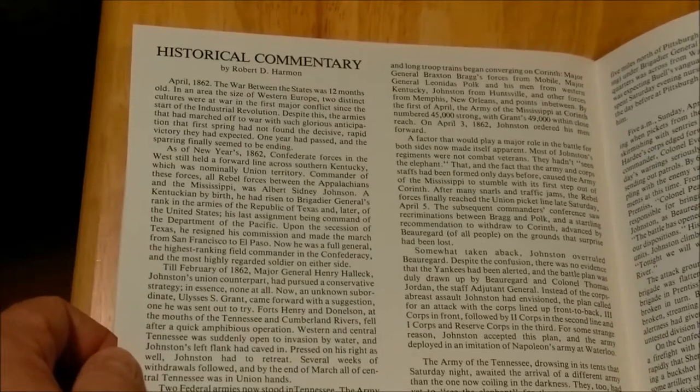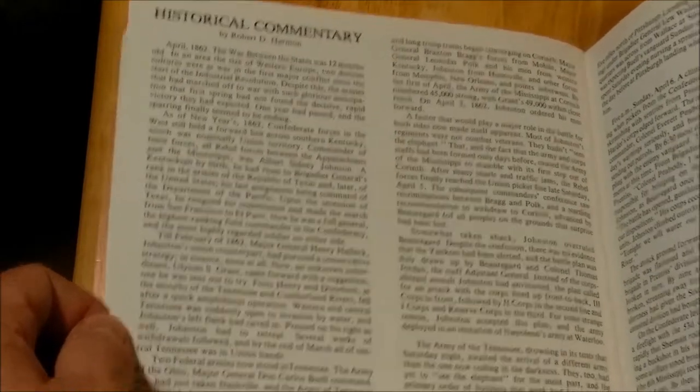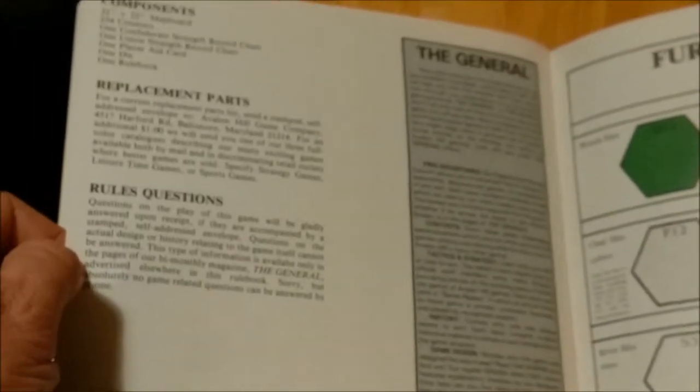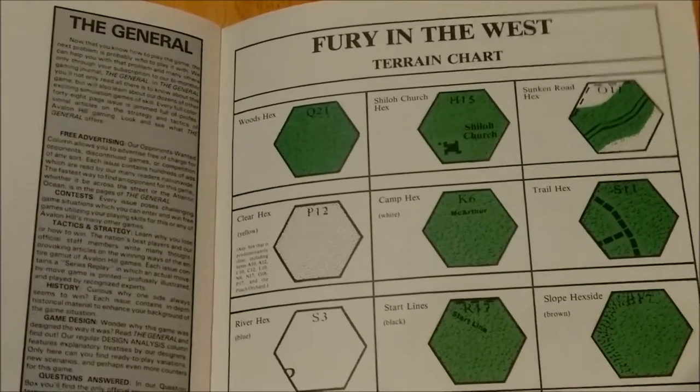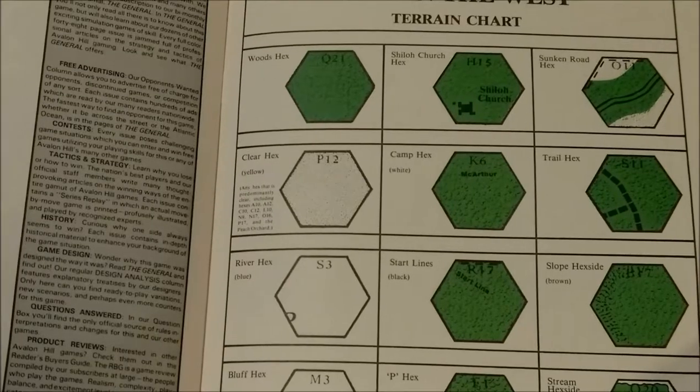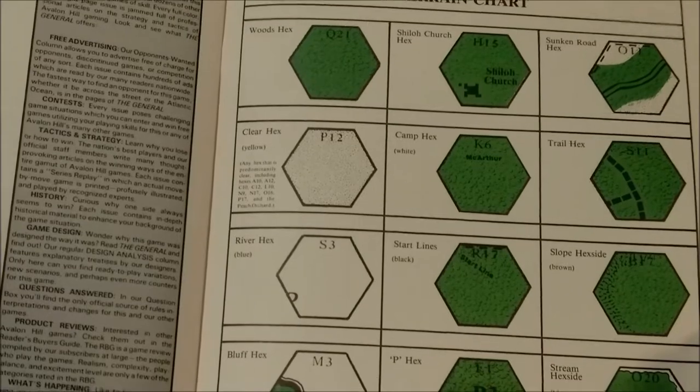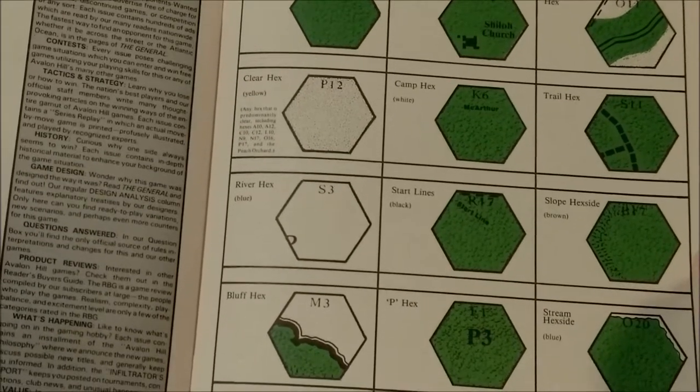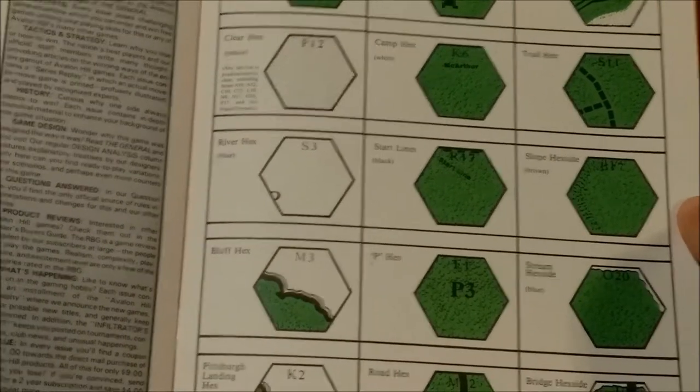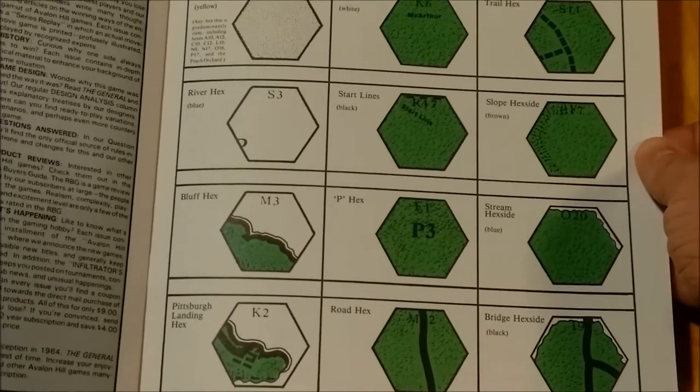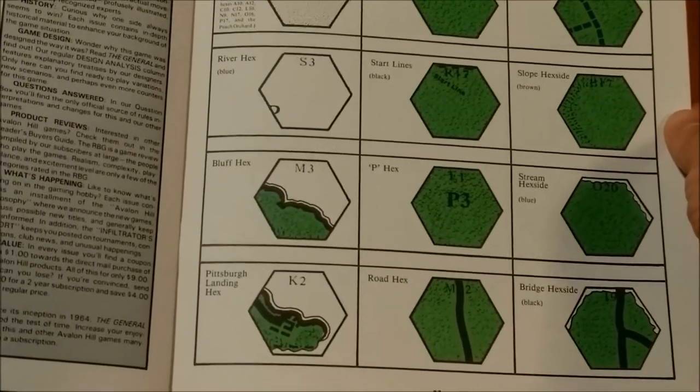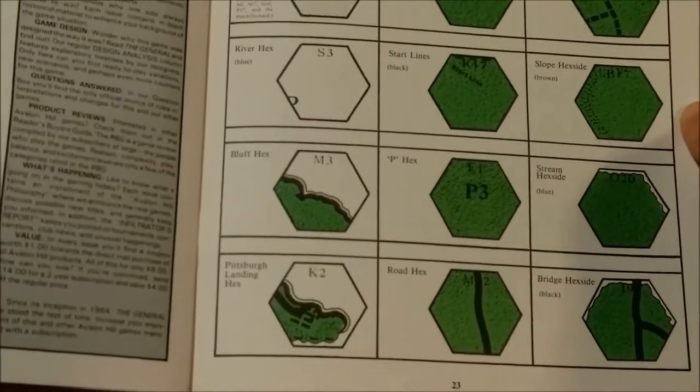There's a nice article by Robert D. Harmon in the back. We have the terrain chart. You can see the different types of terrain: Woods, Shadow Church, Sunken Road, Clear, Camp, Trail. River Hexside, different start lines, slopes, streams, Pittsburgh Landing Hex, Bridge Hexside, Bluff Hexes.